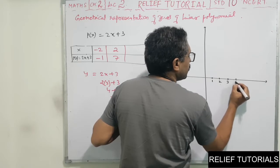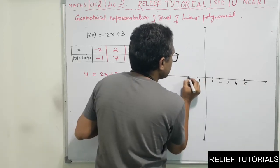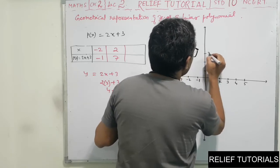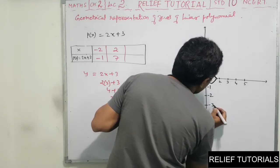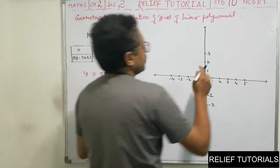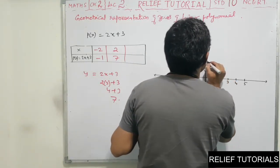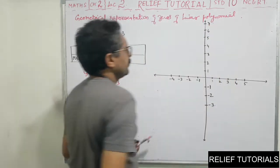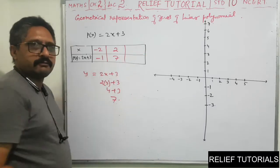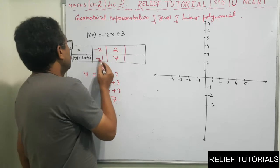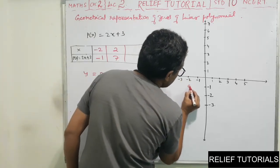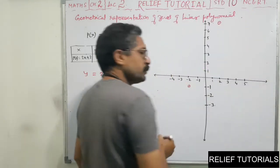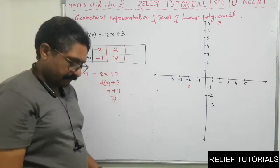We draw the coordinate axes with markings from minus 3 to 5 on X-axis and minus 3 to 7 on Y-axis. We plot the points minus 2 comma minus 1 and 2 comma 7, then join them to get the straight line graph of Y equals 2X plus 3.